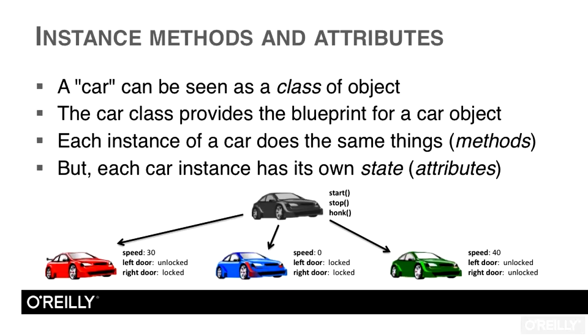In other words, they all have a speed attribute, they all have a left door attribute, they all have a right door attribute. But the state of those values is different for each car, because each car is being used differently. So there's a difference between the blueprint, which is defined in the class or the factory, and the state of each instance, which is defined by its use.